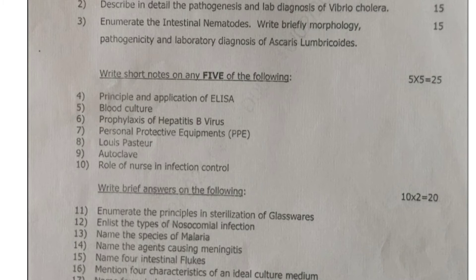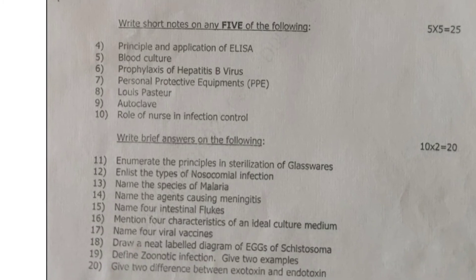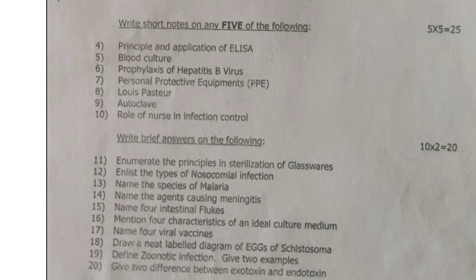The short note questions are: 4th — principles and application of ELISA (enzyme-linked immunosorbent assay); 5th — blood culture; 6th — prophylaxis of hepatitis B virus; 7th — personal protective equipment (PPE); 8th — Louis Pasteur; 9th — autoclave; 10th — role of nurse in infection control program.